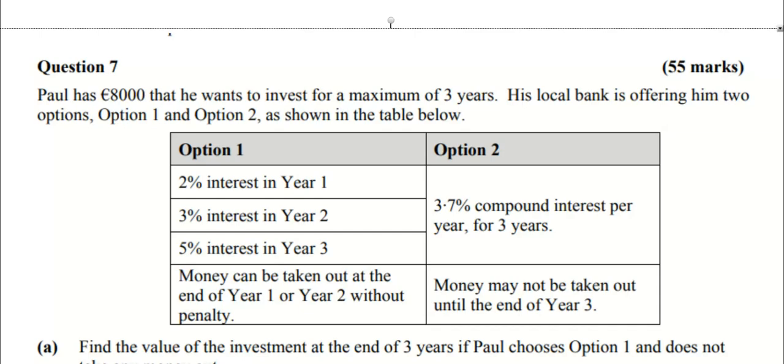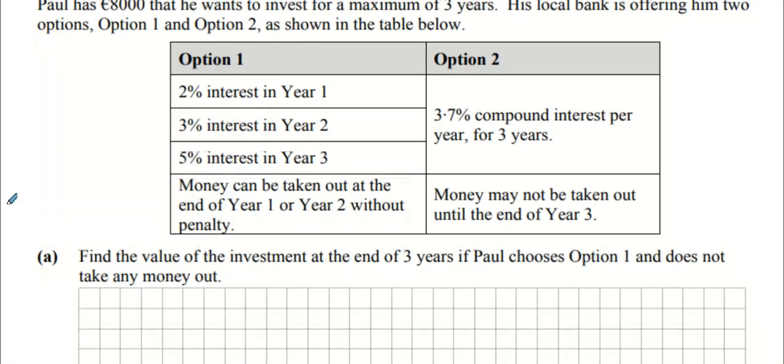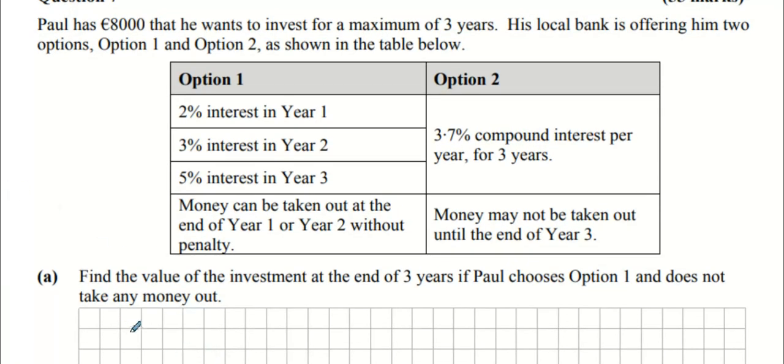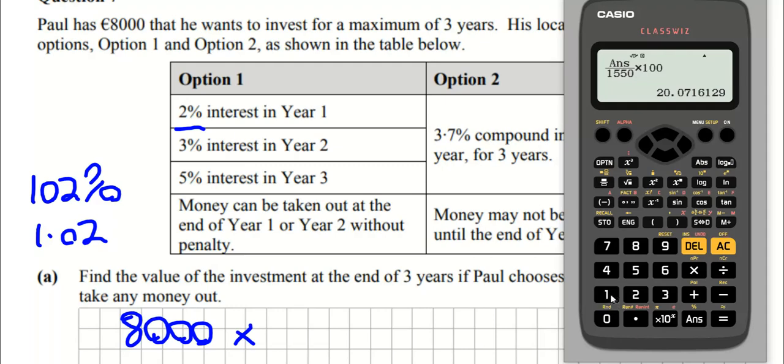Question 7: Paul has eight grand that he wants to invest for a maximum of three years. His local bank is offering two options. Let's go for option one. Everybody see 8000? How do you increase it by 2%? You multiply it by 102% or you can multiply it by 1.02.